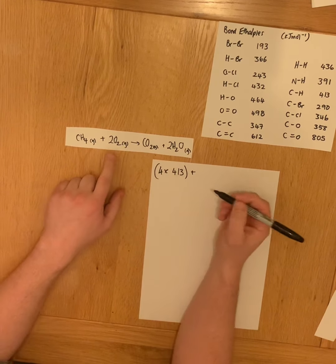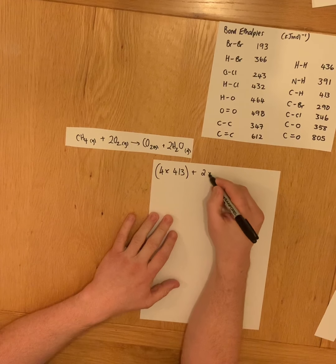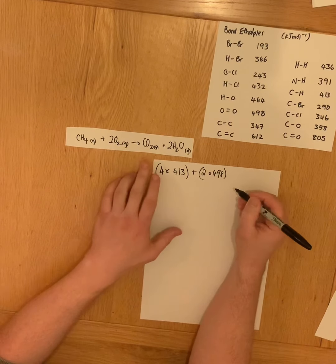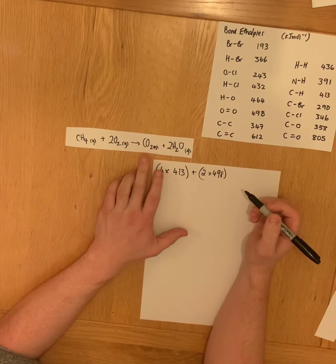You also need to break two moles of oxygen-oxygen double bonds, and you are going to then form two carbon-oxygen double bonds.